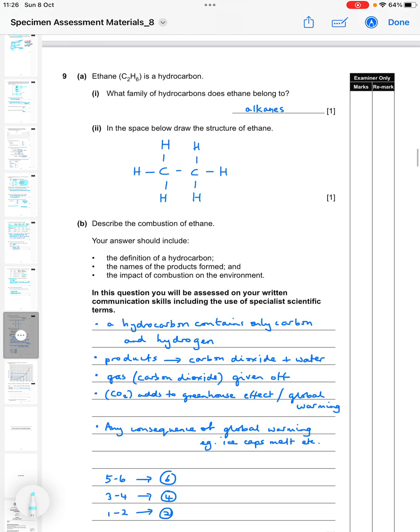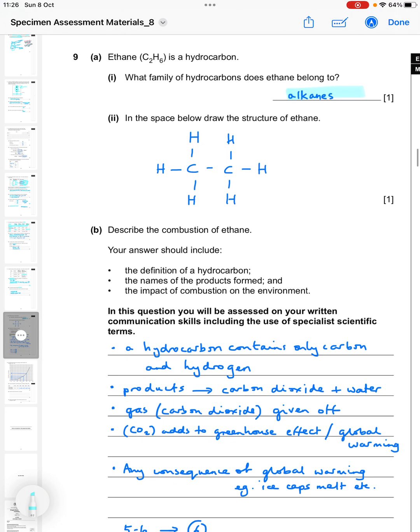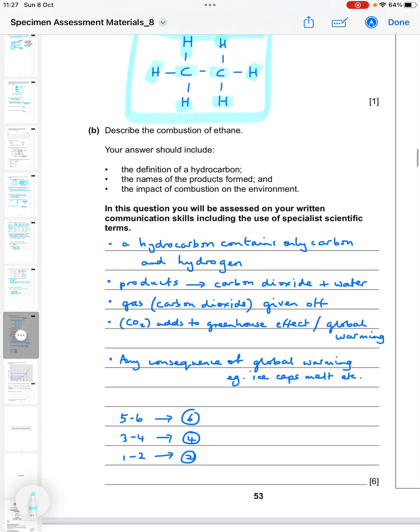Question nine is about hydrocarbons. Ethane C2H6 is a hydrocarbon. What family of hydrocarbons does it belong to? That's alkanes because it ends in '-ane'. In the space below draw the structure of ethane. Ethane means two carbons, so one, two carbons, and then you're just filling the spaces in around each carbon so that each one has four bonds.